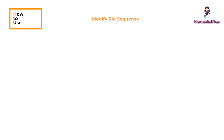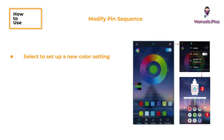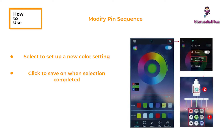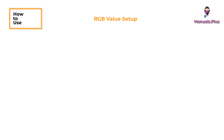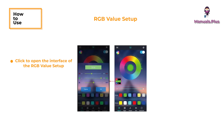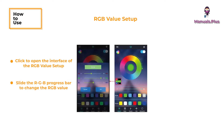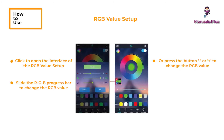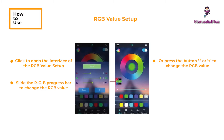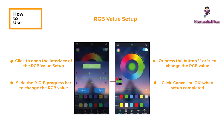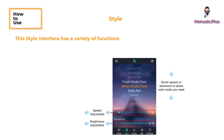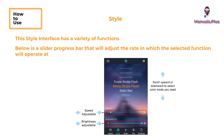Modify Pin Sequence: select to set up a new color setting and click to save when selection is completed. RGB Value Setup: click to open the interface, then slide the RGB progress bar to change the RGB value, or press the minus or plus button to change the RGB value. Click Cancel or OK when setup is completed.